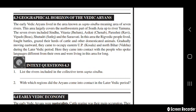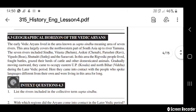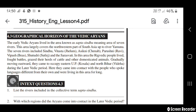The geographical horizon of the Vedic Aryans: the early Vedic Aryans lived in the area known as Sapta Sindhu, meaning 'seven rivers,' covering the north-western part of South Asia up to the river Yamuna. The seven rivers include Sindhu, Vitasta (Jhelum), Asikni (Chenab), Parushni (Ravi), Vipash (Beas), Shutudri (Sutlej), and Saraswati. In this area the Vedic people lived, fought battles, and grazed their herds of cattle. Gradually moving eastwards, they came to occupy eastern U.P. — Kosala and Bihar — during the later Vedic period.